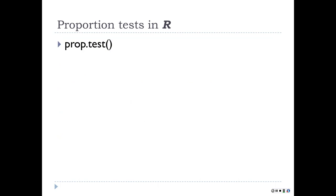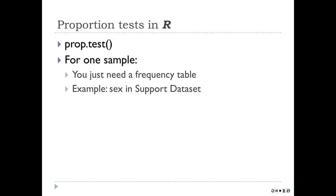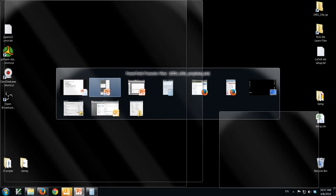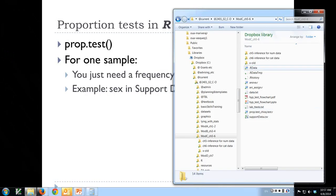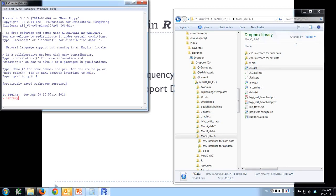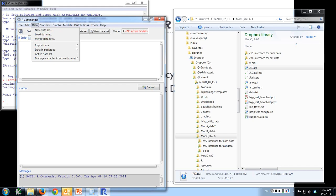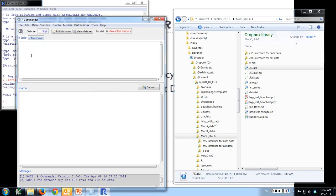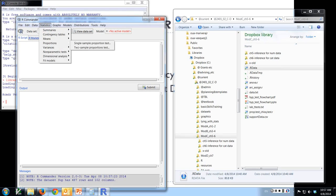In R this is fairly easy — there's a prop.test function in base R, meaning you don't need to download any special packages. This might also exist in R Commander. In base R you have to create a table first. For one sample you need to create a frequency table — for instance, sex in the support data set, male or female. Let's go over to R Commander. Statistics, Proportions, Single Sample Proportion Test.